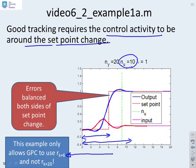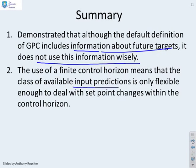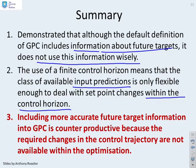In summary, although the default definition of GPC includes information about future targets, it does not use this information wisely. The use of a finite control horizon means that the class of available input predictions is only flexible enough to deal with set-point changes which are within the control horizon. Including more accurate future target information into GPC is often counterproductive because the required changes in the control trajectory are not available to the optimisation.